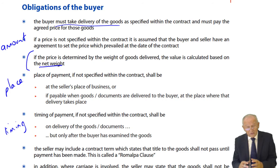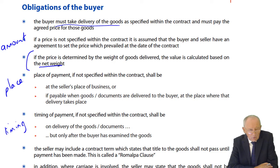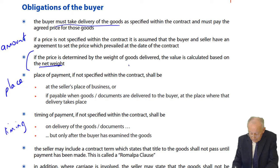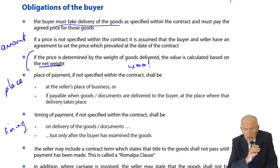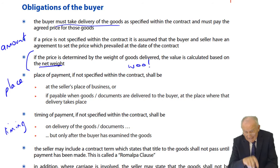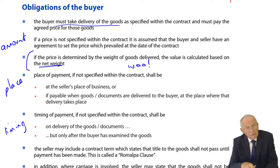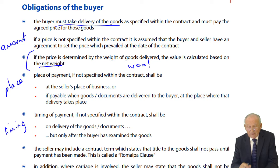Some goods must be kept wet, so drying them would damage them. In that situation it would have to be by negotiation and agreement within the contract that the weight used is the wet net weight. That's a problem — specifying whether to use the dry net weight or the wet net weight.